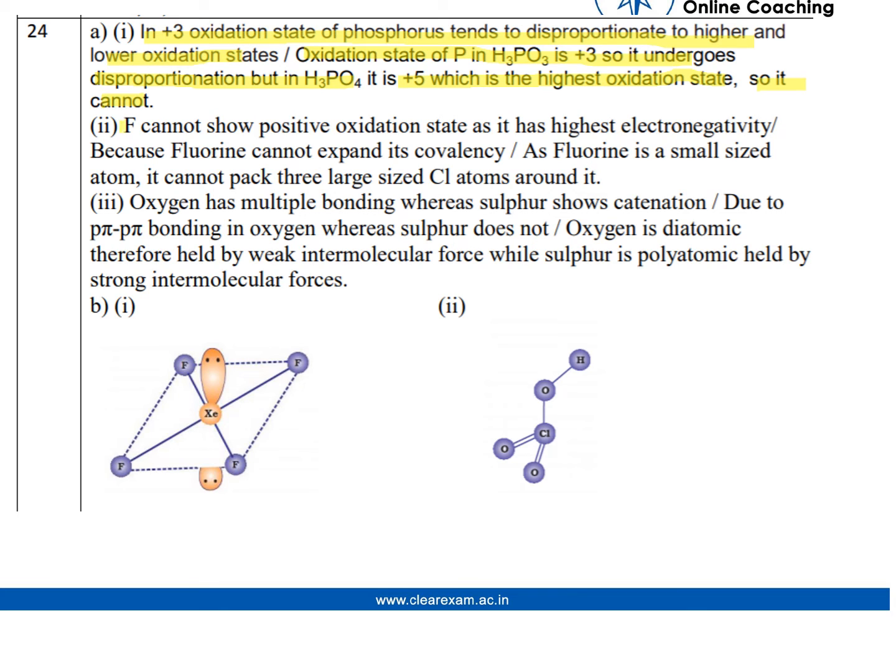The reason is: F cannot show positive oxidation state as it has highest electronegativity. Because fluorine cannot expand its covalency, as fluorine is a small-sized atom, it cannot pack 3 large-sized Cl atoms around it.